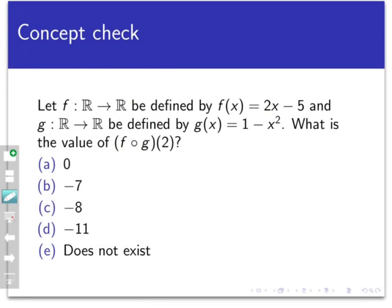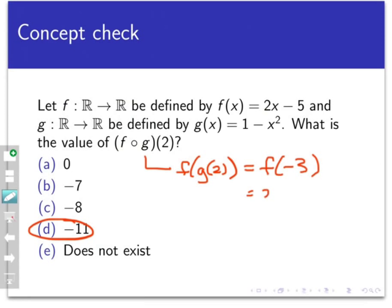So the answer here is negative 11. Let's see why. Well, by definition, f circle g of 2 is defined to be f of g of 2. That means I'm going to take 2, run it through g, and then take the output of that process and run it through f. So running 2 through the function g gives me g of 2 is 1 minus 2 squared equals negative 3. Now let's take that output negative 3 and run it through f. That will give us f of negative 3 equals 2 times negative 3 minus 5, which is negative 6 minus 5, which is negative 11.